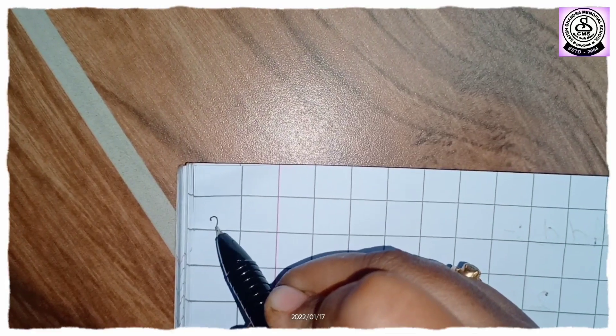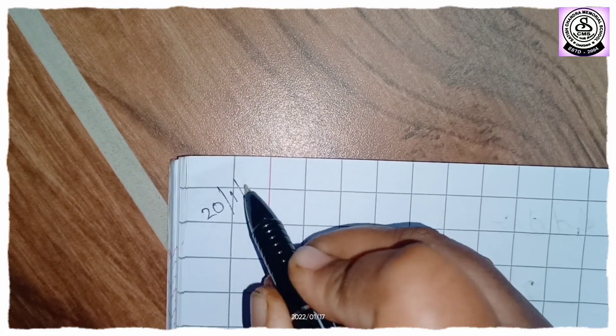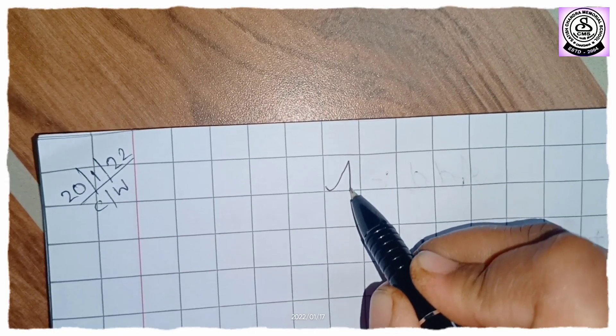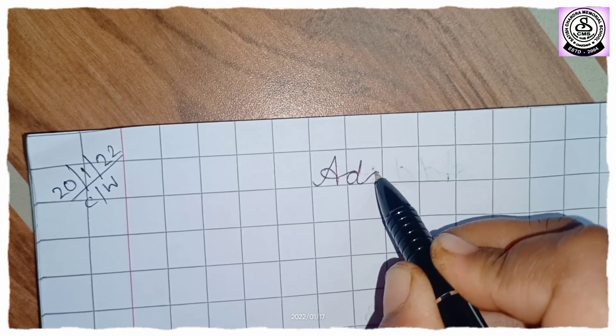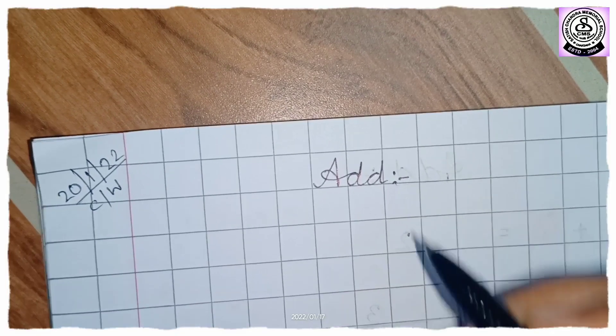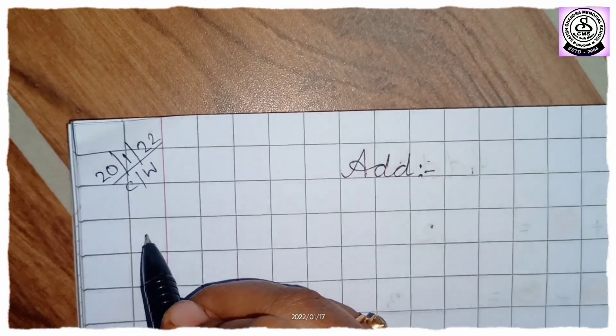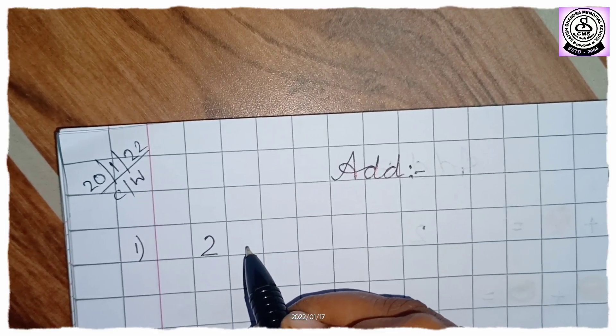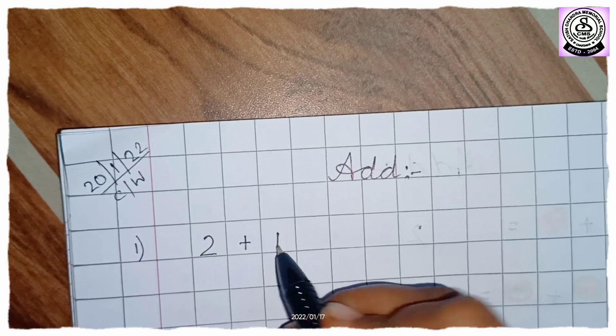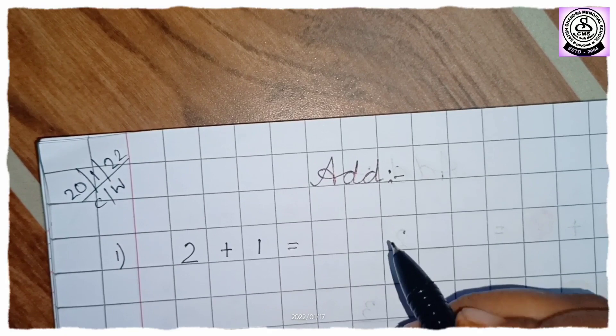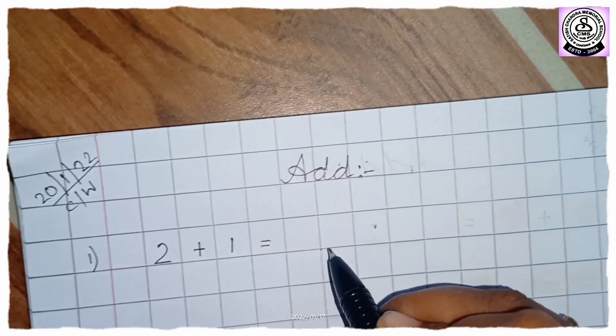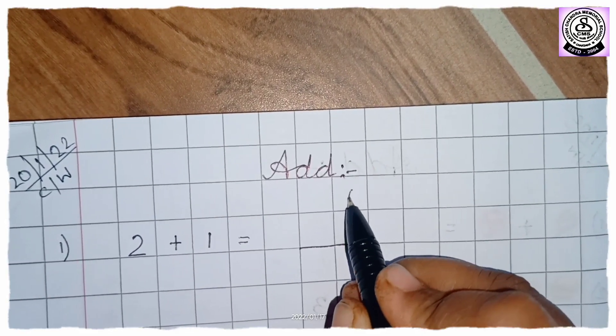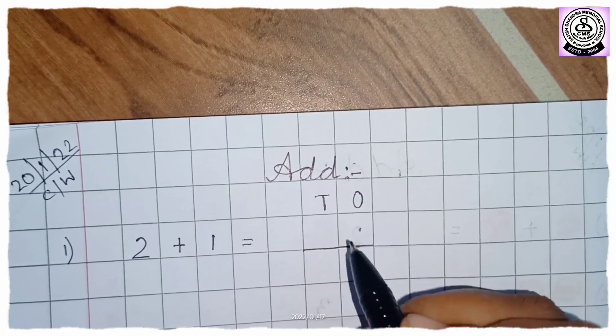So first we will put today's date. So we will write classwork. Give the heading. Cursive capital A. And small cursive D. A double D add. Give the heading. Then we will write question number 1. Now write here 2 plus 1 equals to. Leave 1 box. And give a dash here. Now after you give this dash you will get an idea where to write 1s and 10s. So just above it write O, T. 1s, 10s.